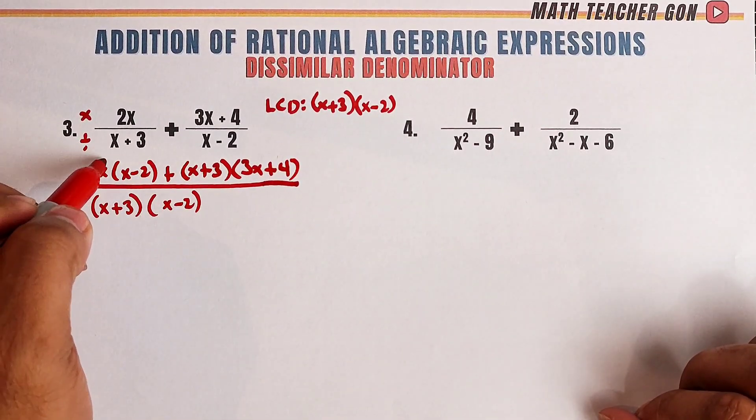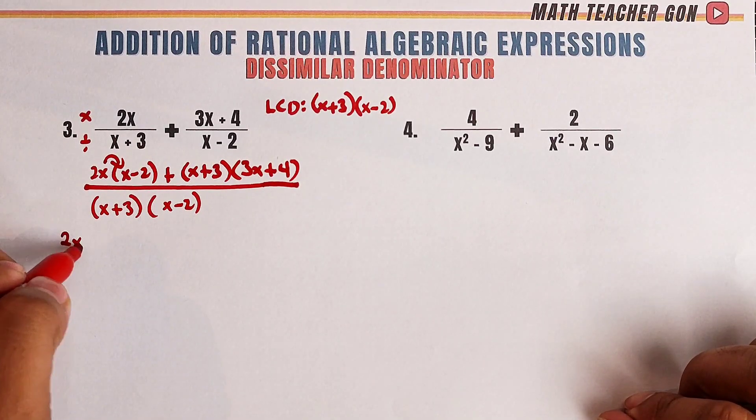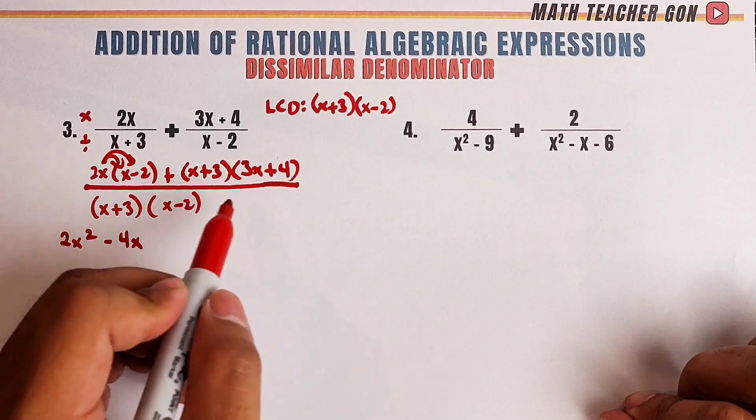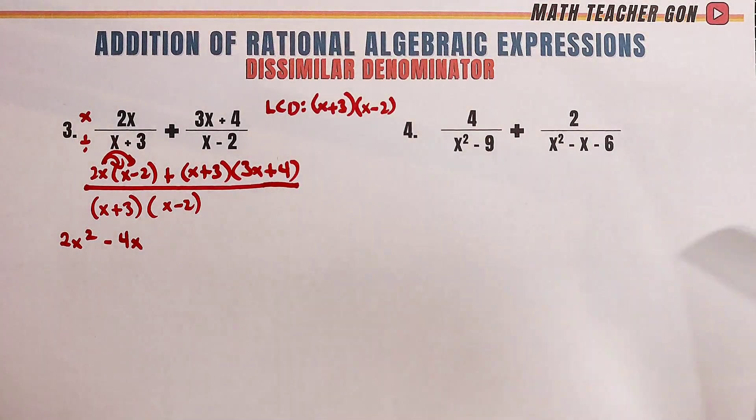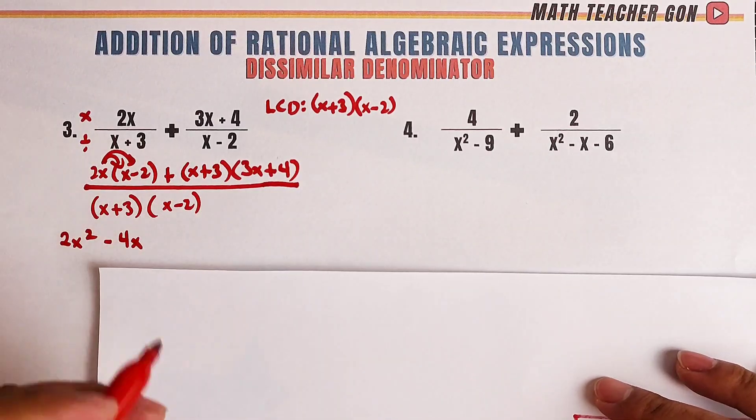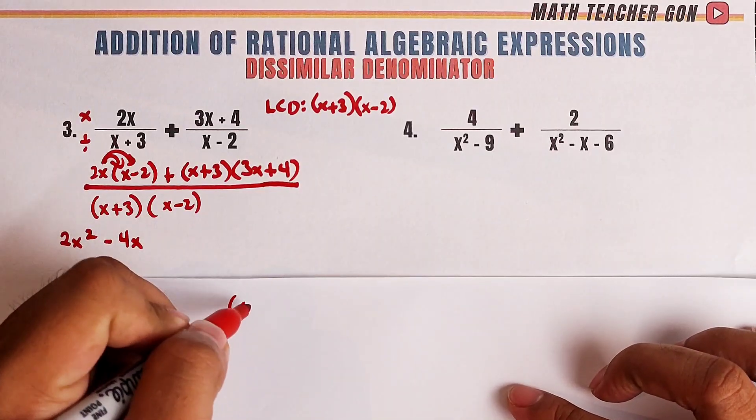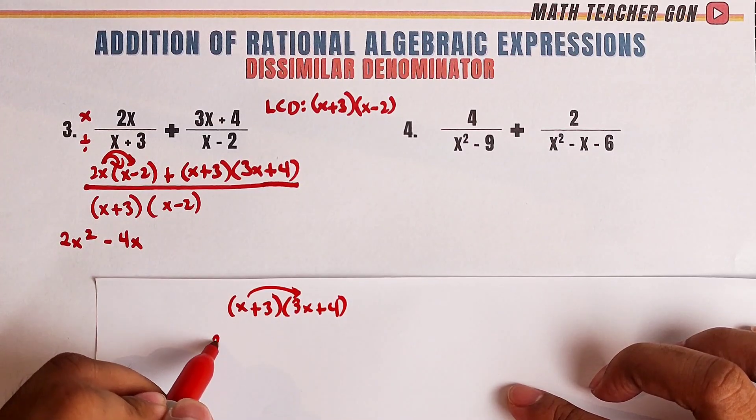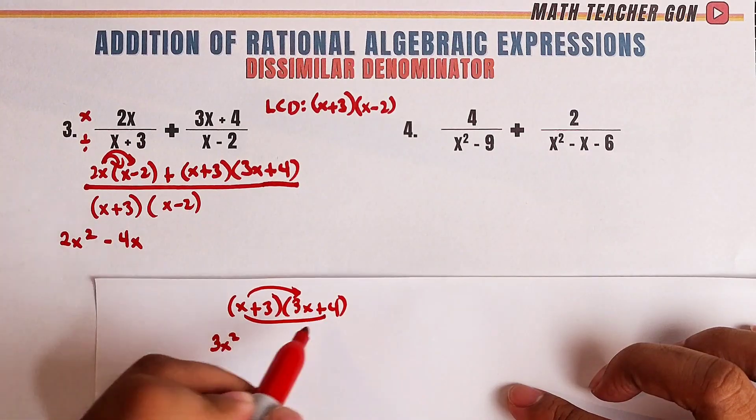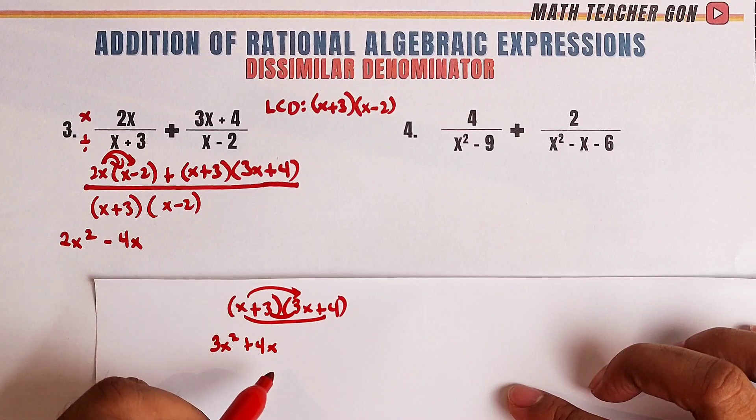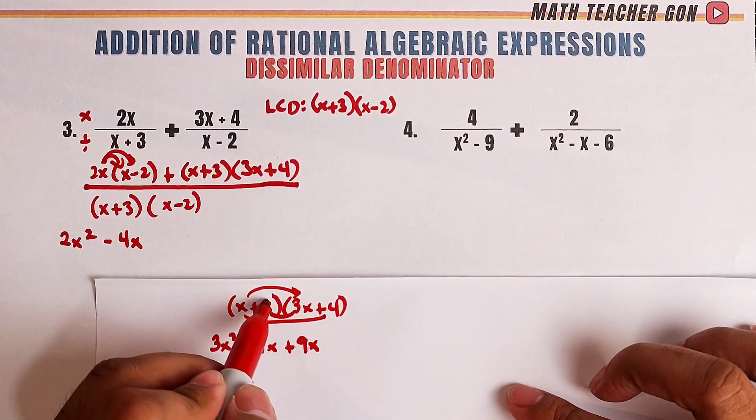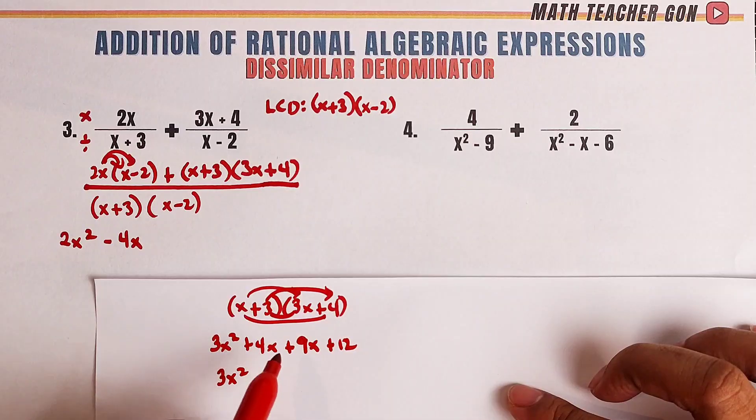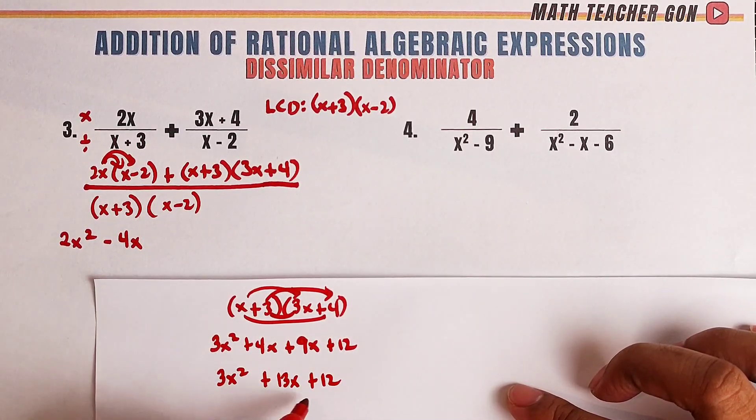Now, for this, the distributive property will give us 2x squared minus 4x. And for this, guys, let me use a sheet of paper. We will use the FOIL method. x plus 3 times 3x plus 4. x times 3x that would be 3x squared. x times 4 that would be plus 4x. Then, 3 times 3x that would be plus 9x. Then, 3 times 4 plus 12. Simplify. 3x squared plus 13x plus 12. That's what we'll put here.